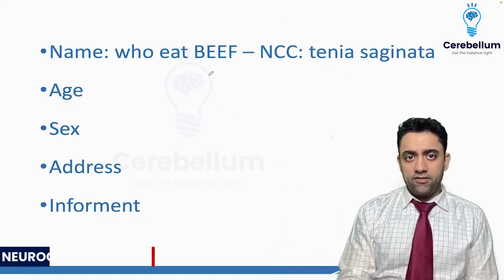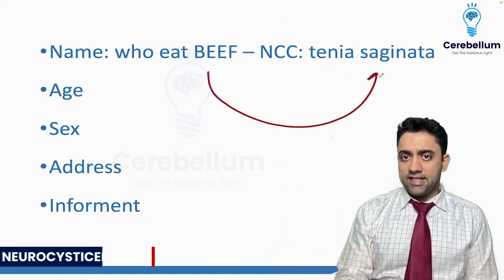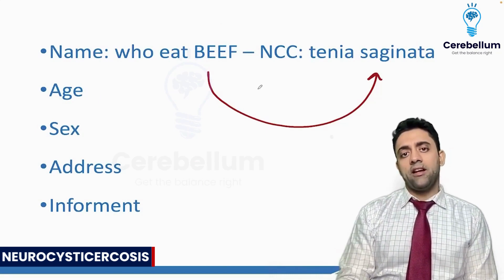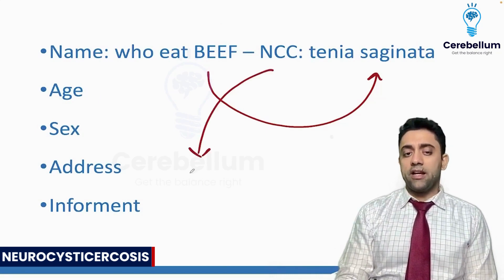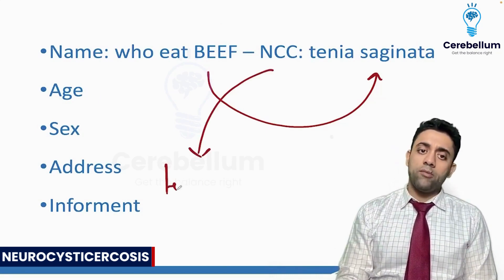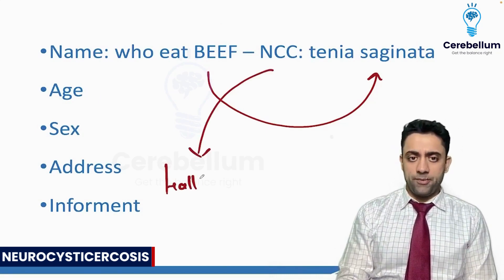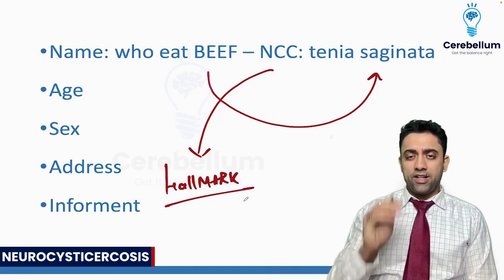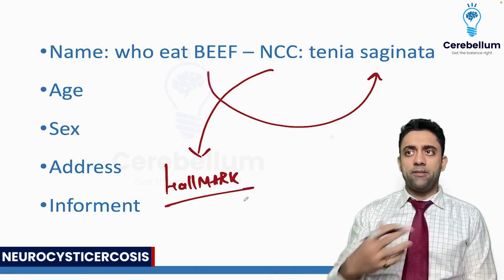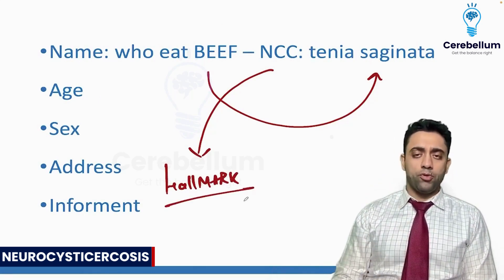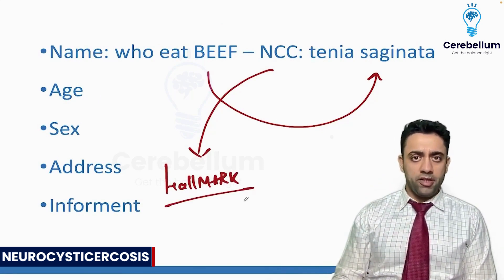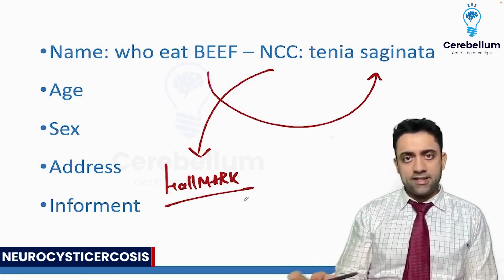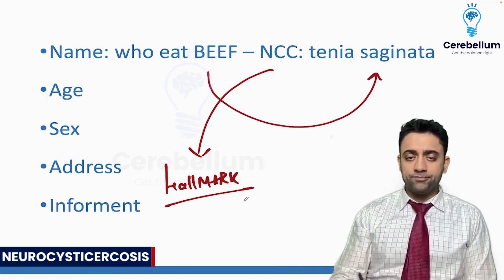From eating beef you'll get Taenia saginata — that's an exam question. Now, one random question: what is the hallmark of NCC? What is the classic finding if you're eating uncooked pork or uncooked beef? What problem can you see on your MRI or CT scan?